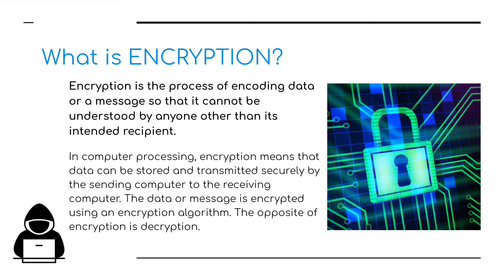What is encryption? Encryption is a process of encoding data or a message so that it cannot be understood by anybody other than the intended recipient. In computer processing, encryption means that data can be stored and transmitted securely by the sending computer to the receiving computer. The data or message is encrypted using an encryption algorithm. The opposite of encryption is decryption.